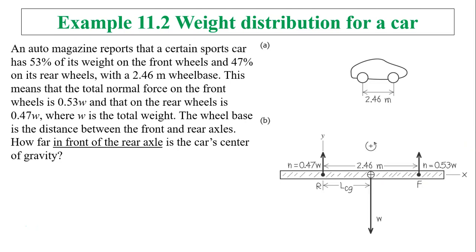Let's take a look at our first example. Auto Magazine reports that a certain sports car has 53% of its weight on the front wheels and 47% on its rear wheels, with a 2.46 meter wheelbase. This means the total normal force on the front wheels is 0.53W, and that on the rear wheels is 0.47W, where W is the total weight. The wheelbase is the distance between the front and rear axles. How far in front of the rear axle is the car's center of gravity? So this is L center of gravity.